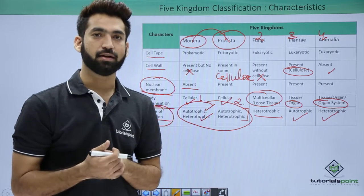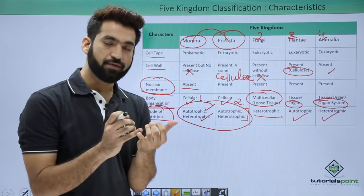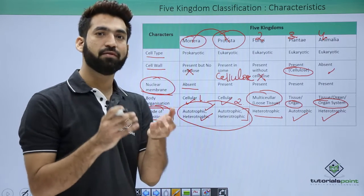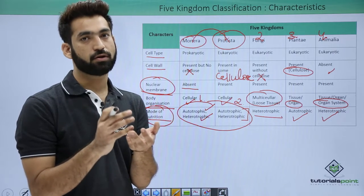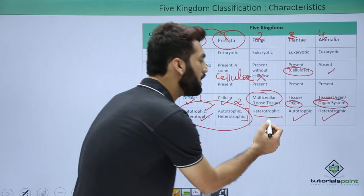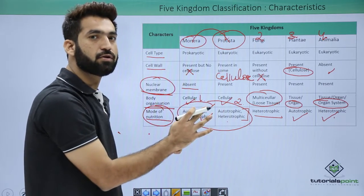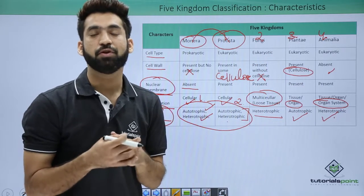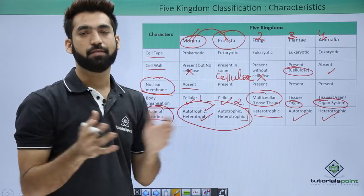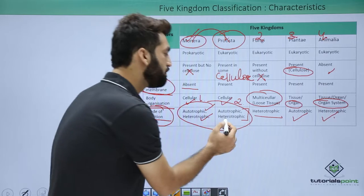Chemo-autotrophic mode of nutrition is never present in kingdom Protista. Kingdom Monera has both photo-autotrophism and chemo-autotrophism, whereas Protista members only have photo-autotrophism. If asked which kingdom has maximum nutritional diversity, the answer is kingdom Monera — it includes photo-autotrophs, chemo-autotrophs, and heterotrophs such as symbiotic, saprophytic, and parasitic organisms.